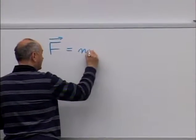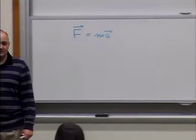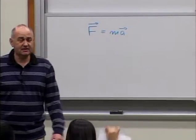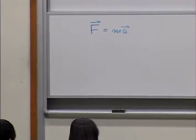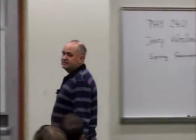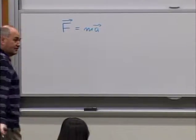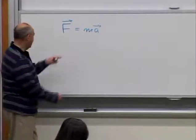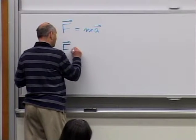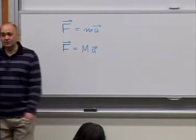We want to link interaction with motion and make sure that we understand what is what in those relations. So let's start with Newton's second law — we actually have eight versions of it. Very often you can just see one version and interpret it in various ways, but if you want to use unambiguous notation you can write it down in different ways as well. Let's try to figure out what the difference is between these two versions.